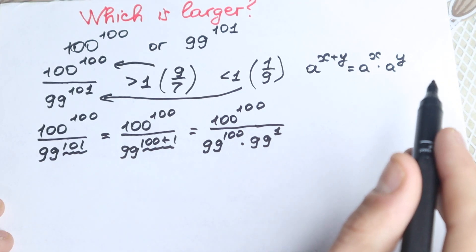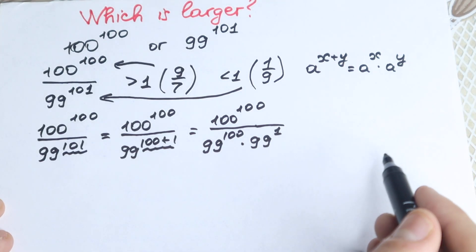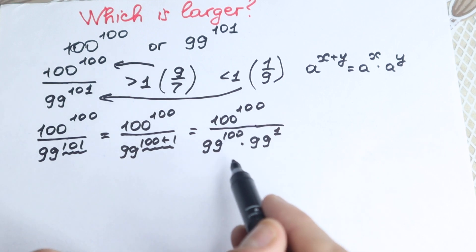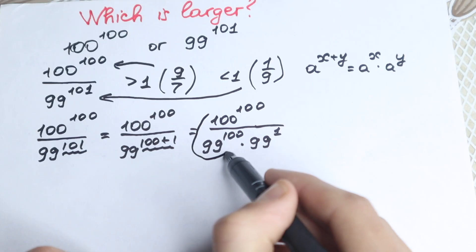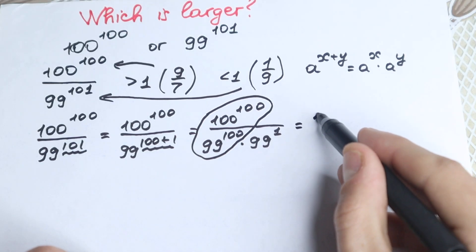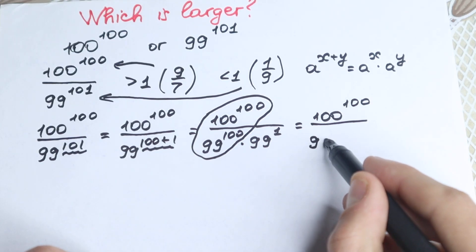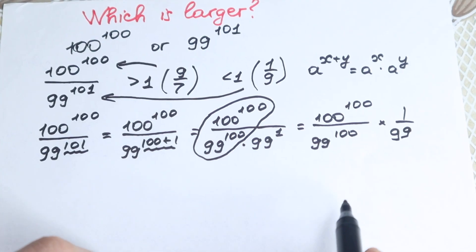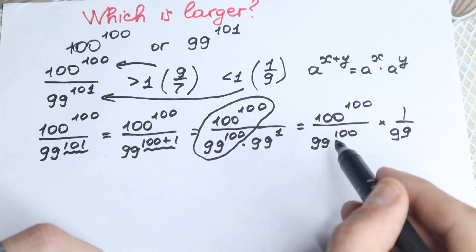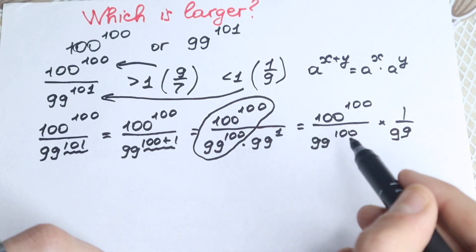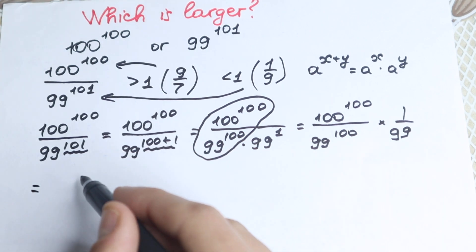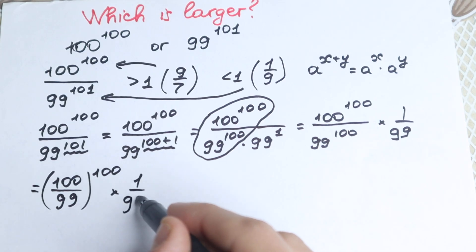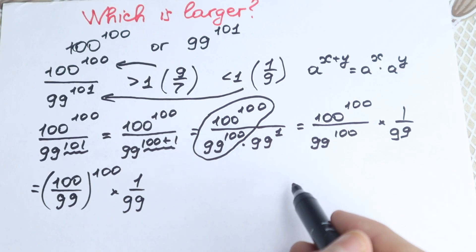Now a really important moment: we have all multiplication and division signs, so we can group elements wherever we want. It is really useful to group the terms with power 100 together. We can write it as 100 to the power 100 divided by 99 to the power 100, and then multiply by 1 over 99. Then applying the rule that a to the power x over b to the power x equals (a over b) to the power x, we get (100 over 99) to the power 100, times 1 over 99.